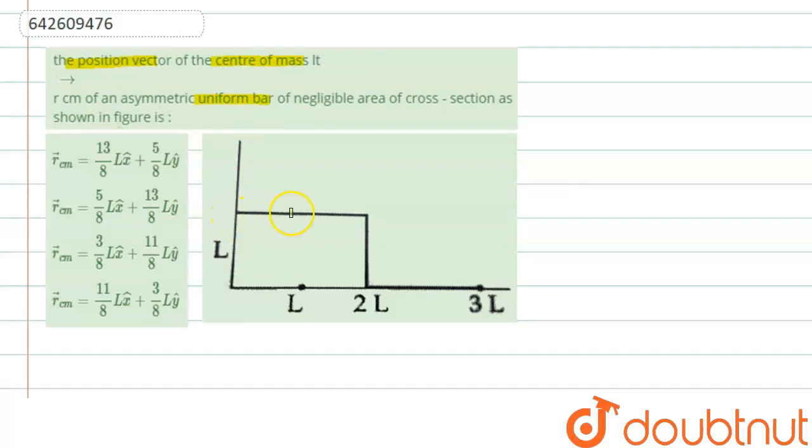Here the lengths are 2L, then L, and then again L. The mass given for this long bar is 2M, and for these two bars it is M and M.